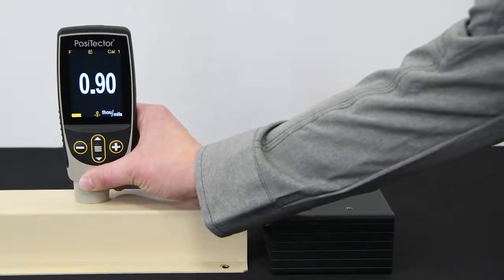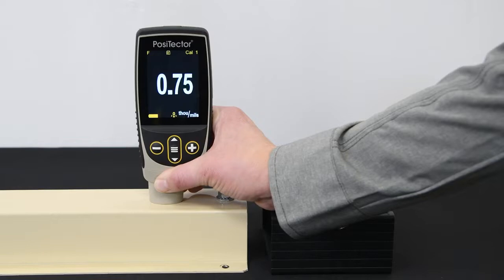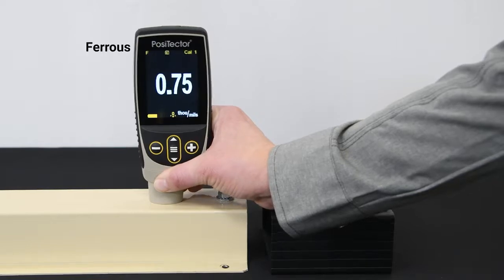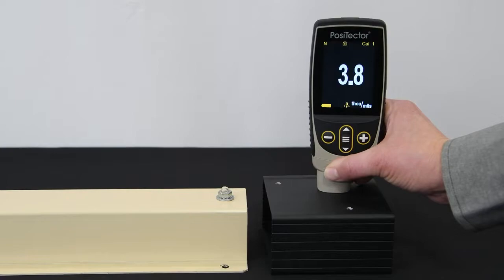Using both magnetic induction and eddy current principles to measure, the PosiTector 6000 accurately measures non-magnetic coatings on ferrous metals such as steel, and non-conductive coatings on non-ferrous metals such as aluminum, copper, and some grades of stainless steel.